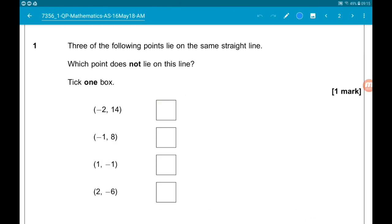Okay, question one. Three of these points lie on the same straight line. We want to circle the one that does not lie on the line. There's quite a few different approaches we could take for this.